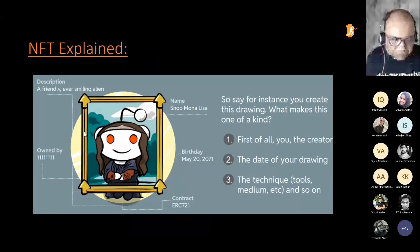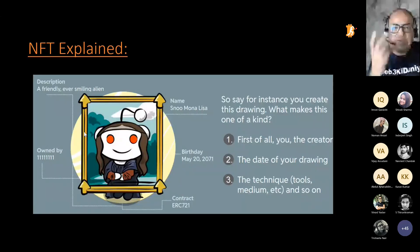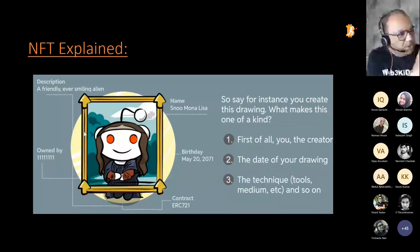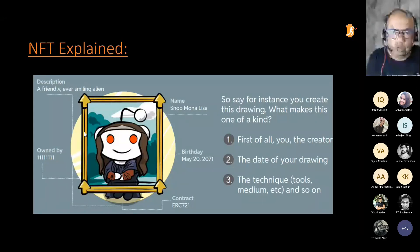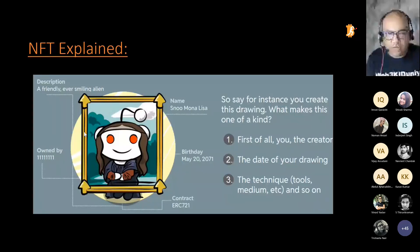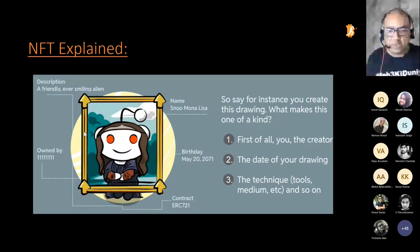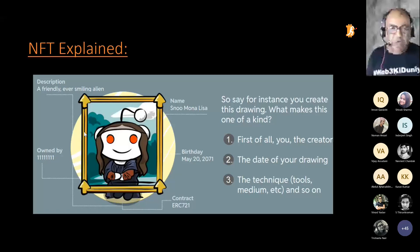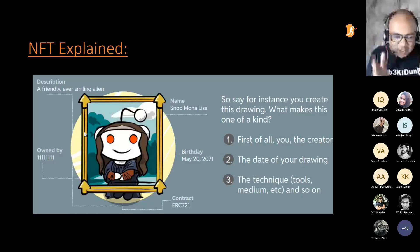What used to happen earlier — suppose you went to Goa and took a beautiful picture of a sunset. You came back, posted it on Facebook, everyone was liking it, and suddenly a friend or cousin did a right-click, downloaded it, put it on their own Facebook profile and said 'I clicked it.' You said 'No, I clicked it!' The person said 'Prove it.' This was the biggest problem in the digital world — copying pictures, music, movies.